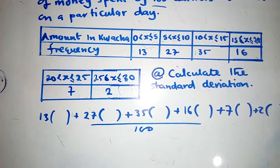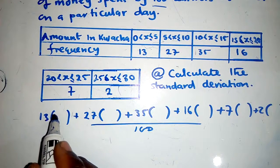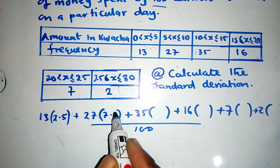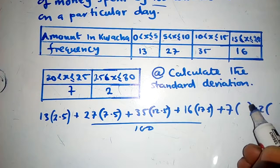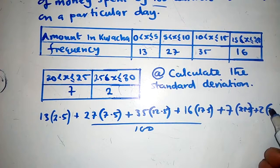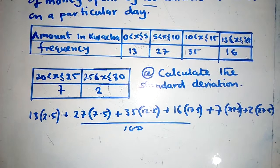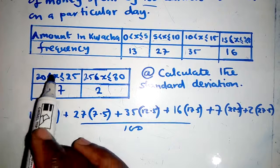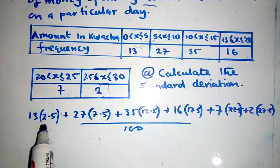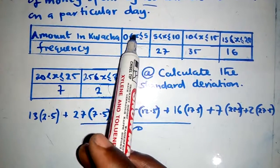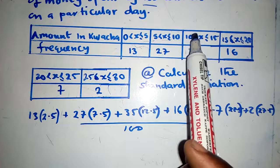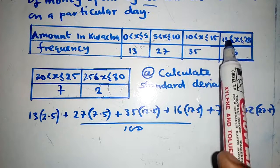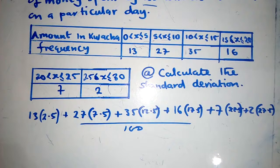In the spaces I left, I'll put the midpoint values: 2.5, 7.5, 17.5, 22.5, and finally 27.5. These are midpoints — for example, 2.5 is the midpoint between 0 and 5, 7.5 is between 5 and 10, 17.5 is between 10 and 15, and so on.